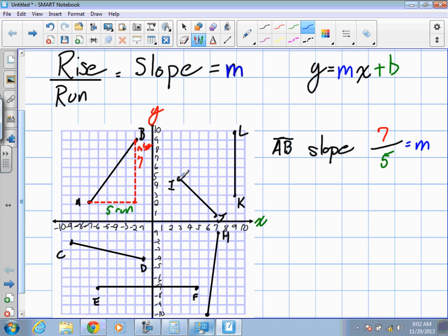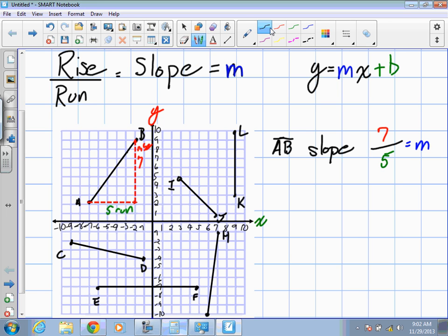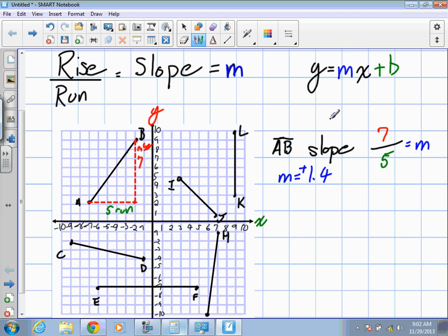Now this slope, we can actually divide this to get a value. If we were to divide seven and five, what would we get? Our m is equal to 1.4. This is a positive or negative value? Positive. Which means our line goes from the bottom left to the upper right corner. Just like when we had a positive relationship for a linear equation, this is a positively sloped line.